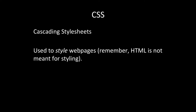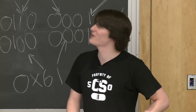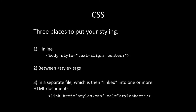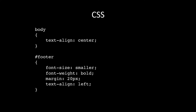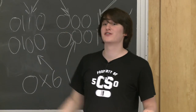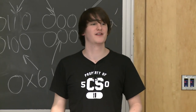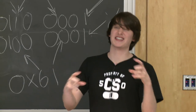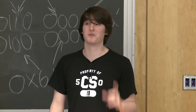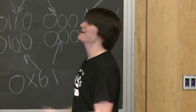CSS — cascading style sheets — is how we style web pages, not HTML. You can put CSS inline, between style tags, or in a separate file linked in. The first example matches the body tag and centers it. The second example matches the element with id 'footer' and left-aligns it. Even though body says text-align center, footer overrides to left — that's the cascading part. More specific CSS selectors take precedence over less specific ones.